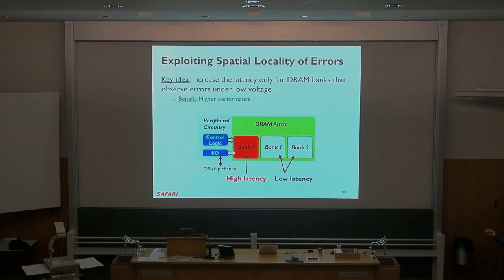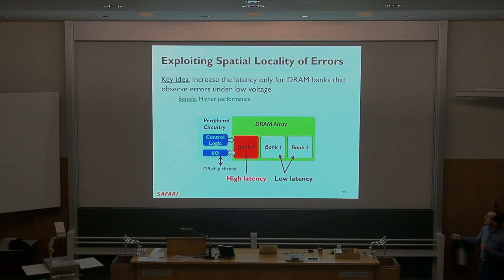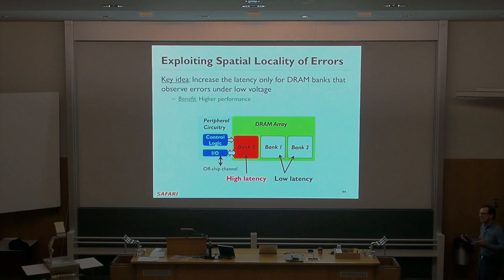The second key idea is to increase latency only for those DRAM banks that observe errors at low voltage. Some banks require high latency because they fail at low voltage, but many other banks can still be operated at low latency. So be bank-aware. Those low-latency banks provide high performance even though voltage is reduced, and only the failing bank provides lower performance. We're adding heterogeneity in latency — everything operates at the low voltage, but with different latencies per bank.